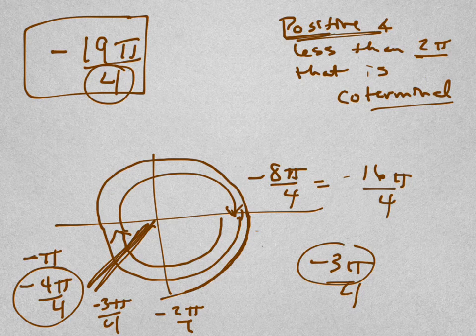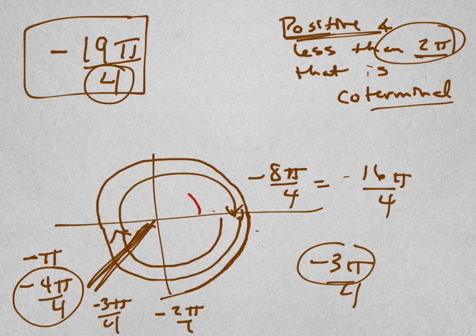But it's asking me for the positive angle less than 2π. So now I'm going to change colors. Now I've got to go this way. So is that 180 plus 45? Let's not even think about 180 or π or anything. We're just literally breaking this up into fourths.